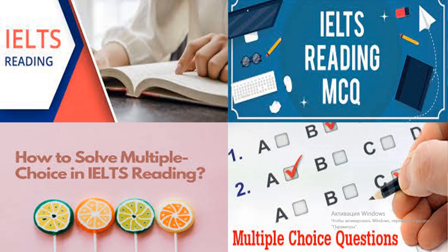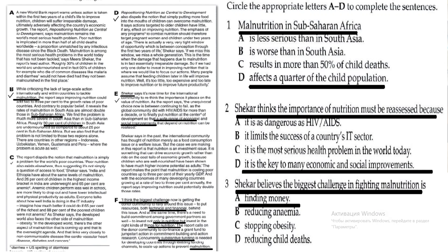For example, take the word 'malnutrition.' The word 'nutrition' appears in Section A of the reading passage many times, so we know it's a key theme. The associated word 'malnutrition' also occurs in Section A, where 'diverse poor nutrition' is used to mean the same thing. Other clues include references to the most serious health problems and information that poor nutrition in the first two years of a child's life causes irreparable damage.